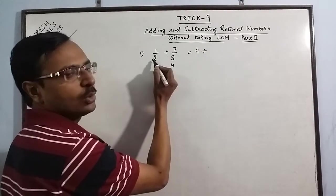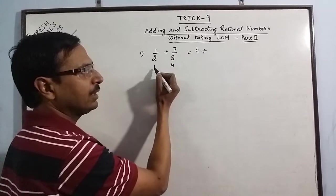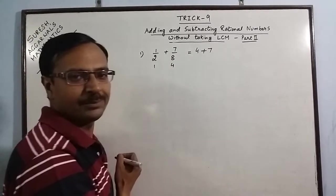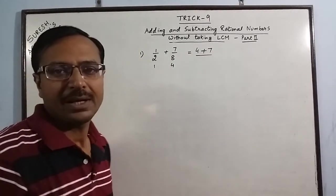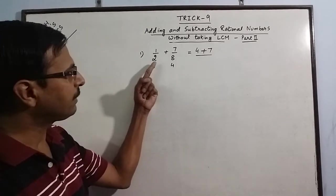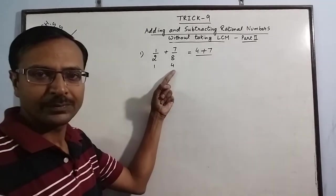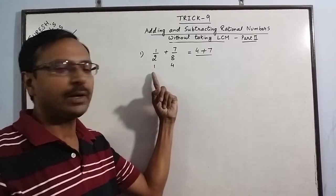Now instead of multiplying 1 by 8, we multiply 1 by 4, that gives us 4. And instead of multiplying 7 by 2, we multiply 7 by 1, so that gives us 7, and the denominator is obtained either by multiplying 2 and 4 or by multiplying 8 and 1.